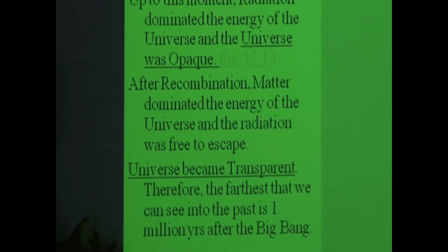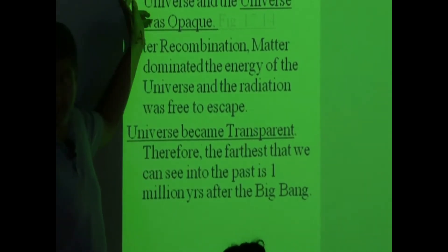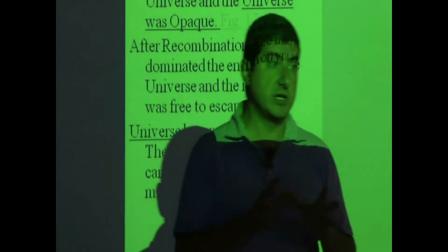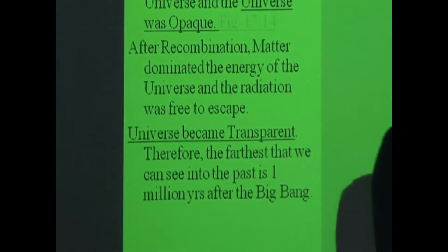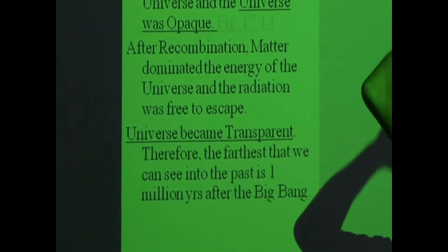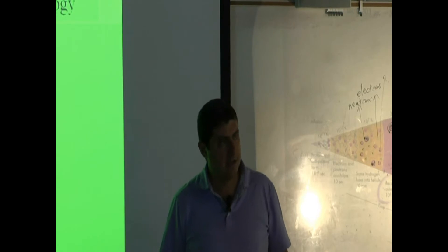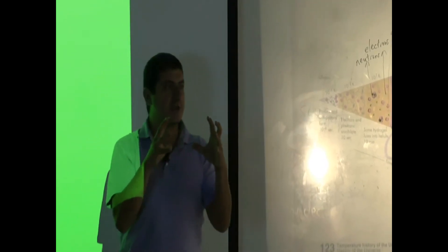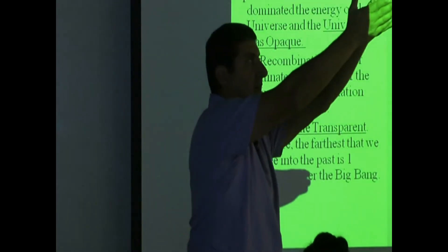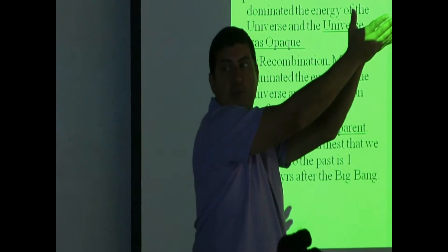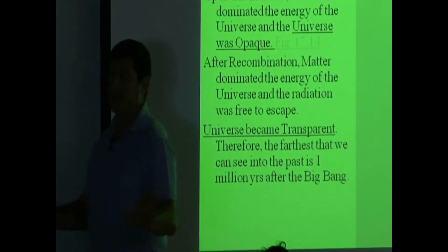Therefore, the farthest we can see into the past is 380,000 years after the Big Bang. Remember: the further you look out in space, the further you see into the past of the universe. But if we want to see the Big Bang itself — looking farther and farther away — we can't, because during the first 380,000 years the universe was opaque. You can only see objects forming after the recombination event, after 380,000 years. The universe doesn't want us to see its beginnings.